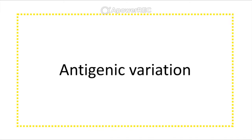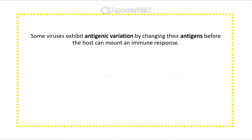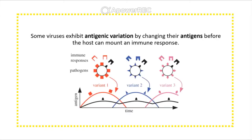Antigenic variation is where viruses alter their antigens over time so the host cannot mount an immune response. One variant may become popular, but as immunity rises it declines and a new variant emerges. This is different from antigenic shift, where major changes to the types of antigens present take place.